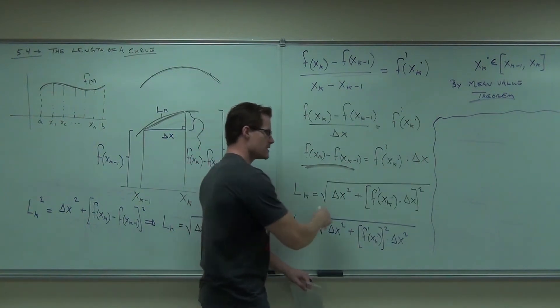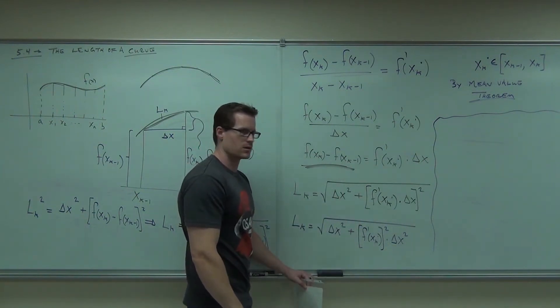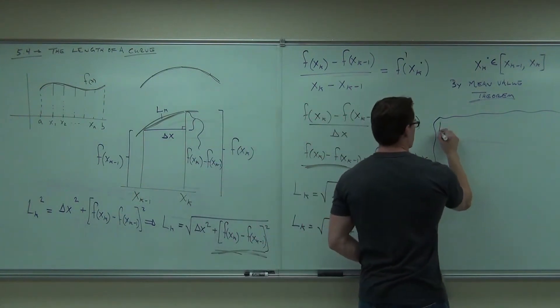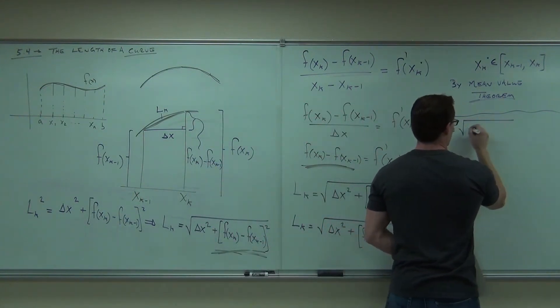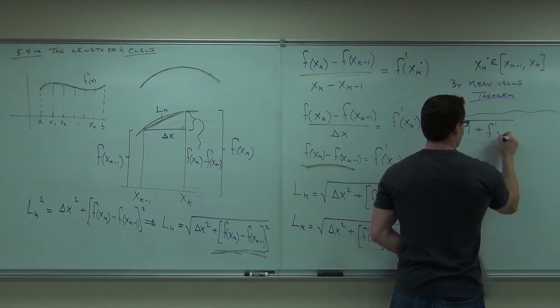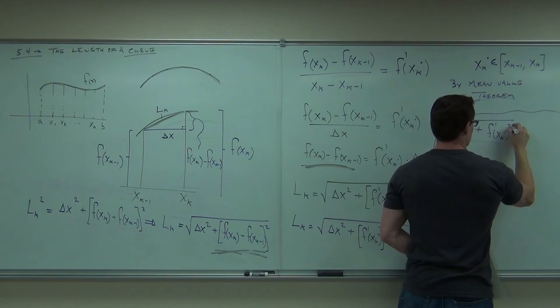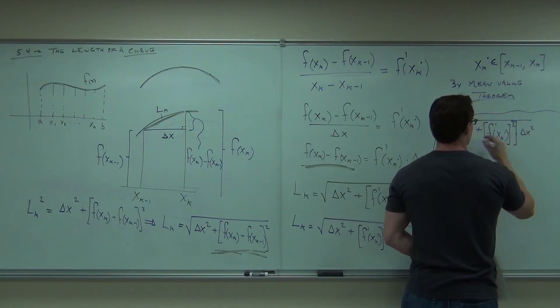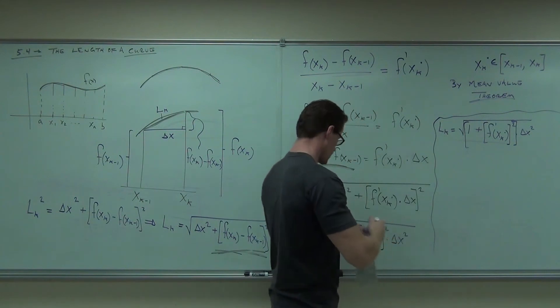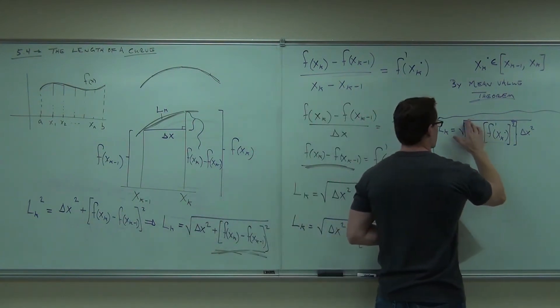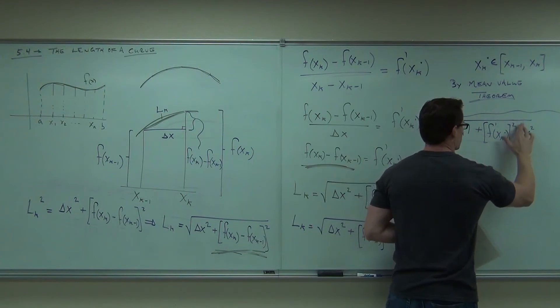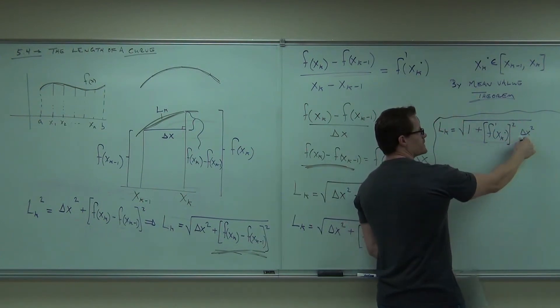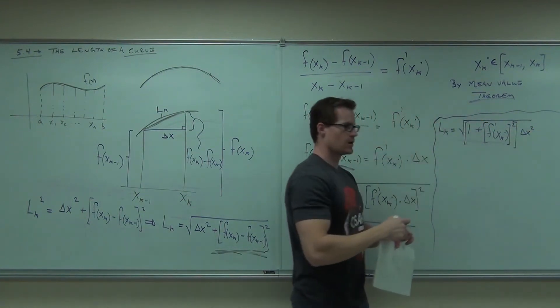From here, did you see that we can factor out a delta x squared? So we're going to have one plus f prime of x k squared times delta x squared. But that is going to be in a little bracket. If you factor out the delta x squared, you need to track it around the square thing just like that.